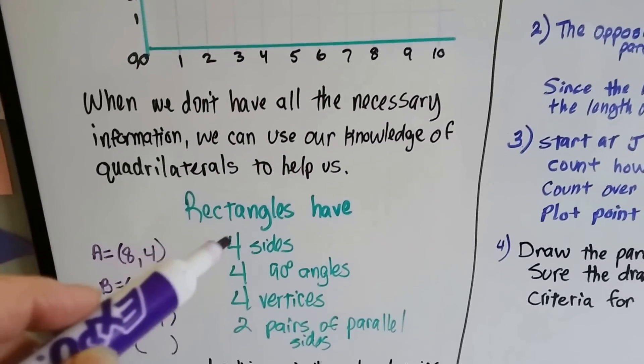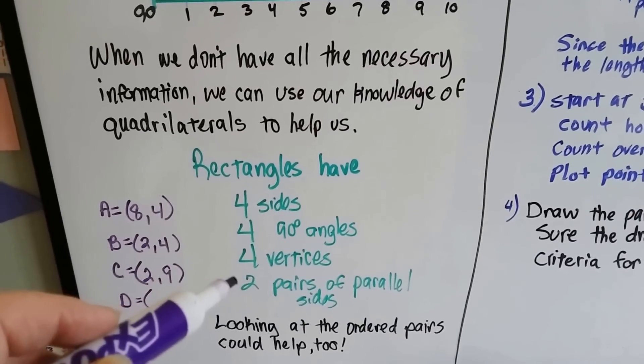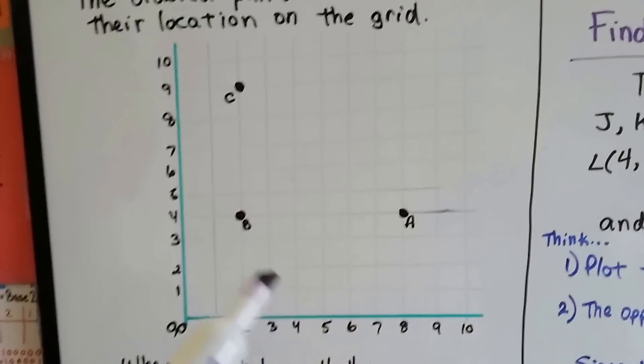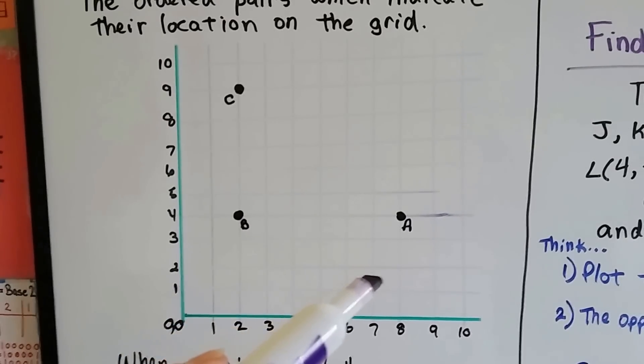Well, rectangles have four sides, four 90-degree angles, four vertices, and two pairs of parallel sides.